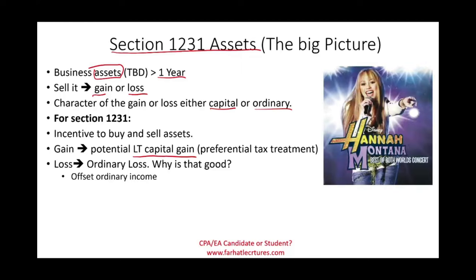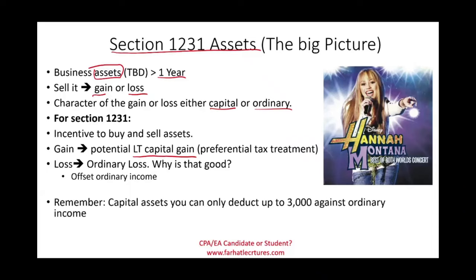As Hannah Montana would say, you're getting the best of both worlds. Remember, with capital assets, losses can only be deducted up to $3,000 against ordinary income. That's why Section 1231 losses are important — they can fully offset ordinary income, while the gains are potentially long-term capital gains.